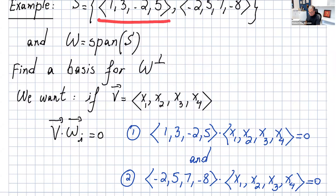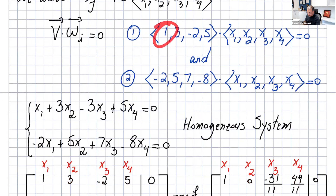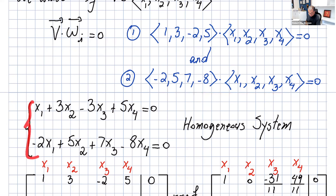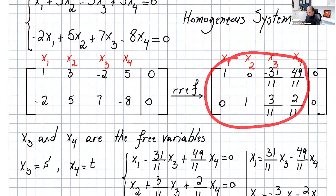How can we set that up? If we take the first vector w1 dot v, we should get zero, and also the second vector w2 dot v should give zero. Writing out the dot product for the first one: x1 plus 3x2 minus 3x3 plus 5x4 equals zero. This gives us a homogeneous system, which we solve by taking the RREF of the matrix.